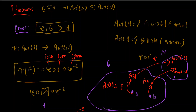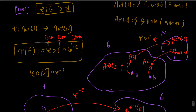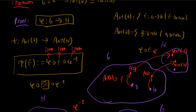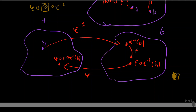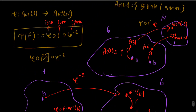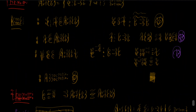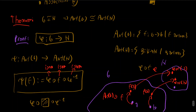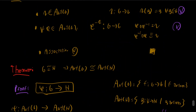So our isomorphism Φ: Aut(G) → Aut(H) maps f ↦ φ ∘ f ∘ φ⁻¹. This maps automorphisms of G to automorphisms of H, proving the theorem. Be careful though: the converse is not true in general. If Aut(G) ≅ Aut(H) it does not imply G ≅ H — this is not an if-and-only-if relationship.